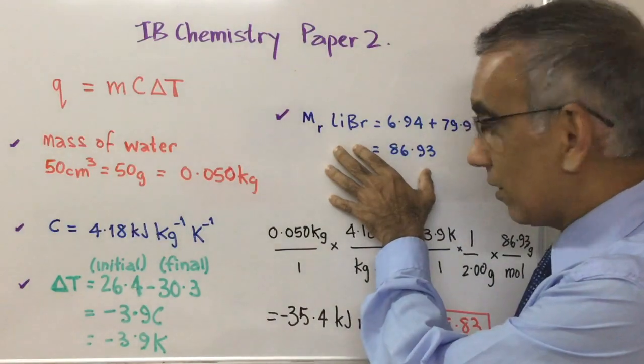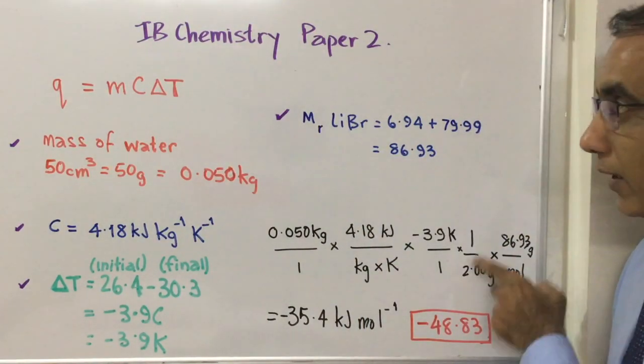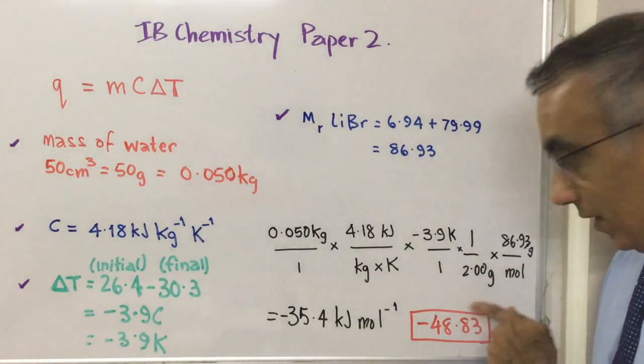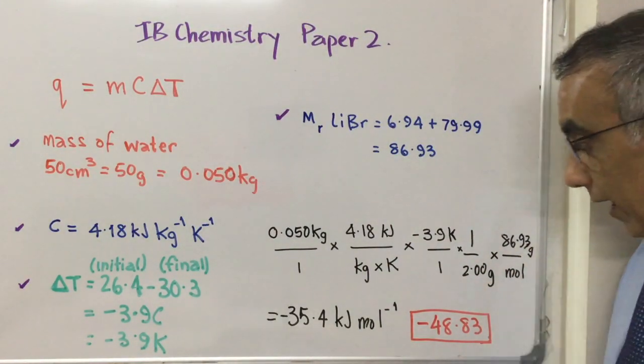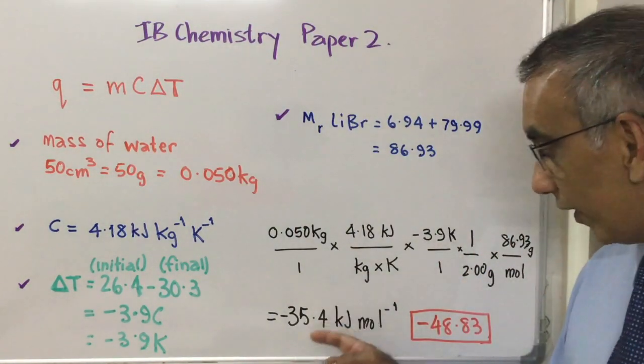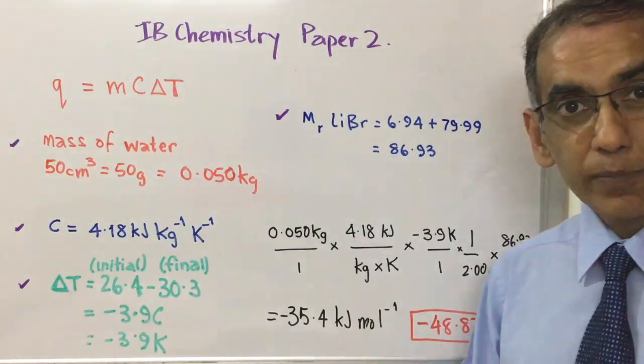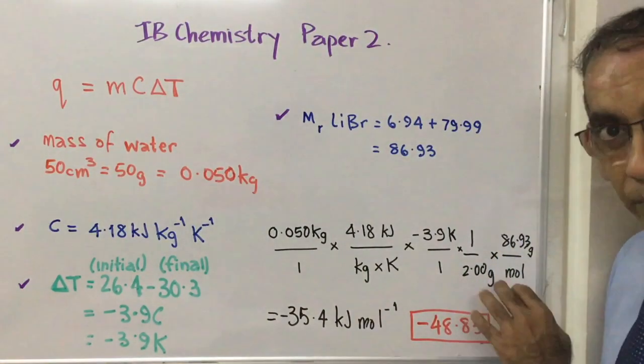Here we have the formula mass of lithium bromide that is brought into the calculation here so that we can scale up the data that was based on two grams to per mole. Then with the units cancelling, we get this final answer of 35.4 kilojoules per mole.